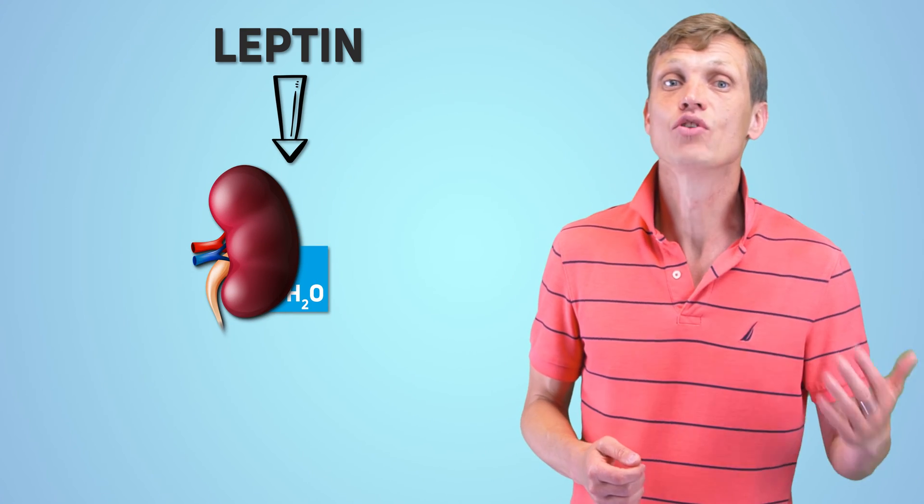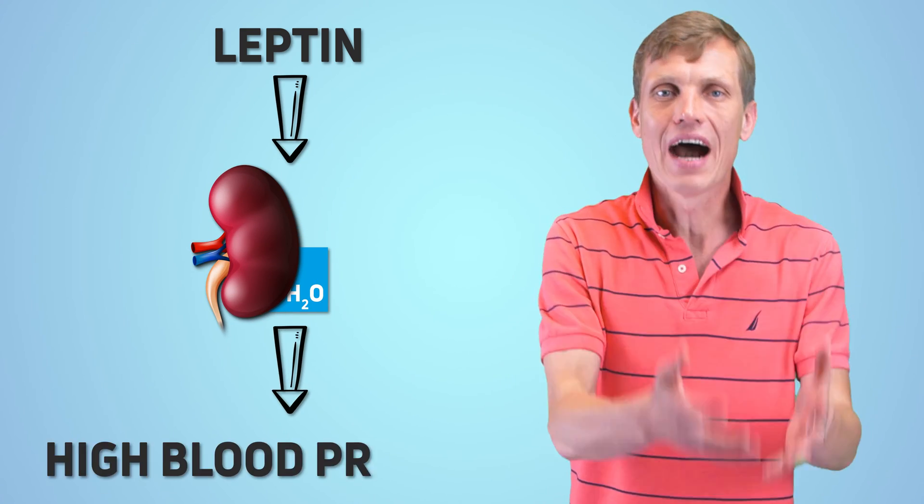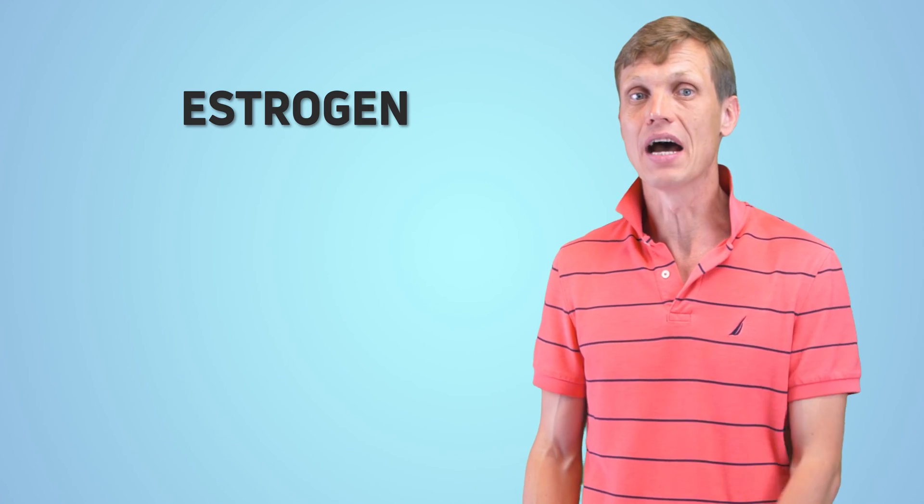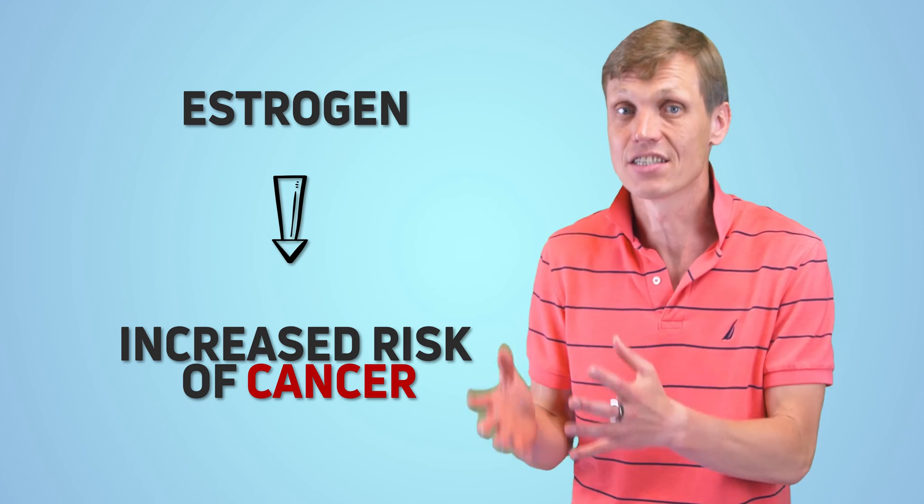Leptin, a hormone predominantly produced by fat cells, causes your kidneys to excrete less water than normal, further contributing to high blood pressure.